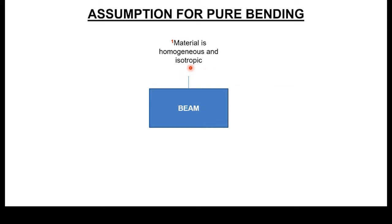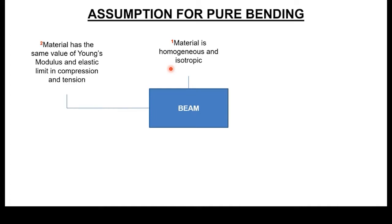Isotropic assumes that the flow of stress is along the longitudinal plane of a given beam section — we don't normally factor the lateral medial strain. Since the material is homogeneous, we assume that for each segment of the beam, the Young's modulus and elastic modulus will be the same in both compression and tension. The value of E will not change.